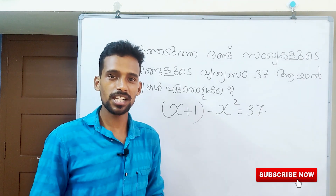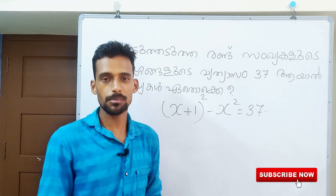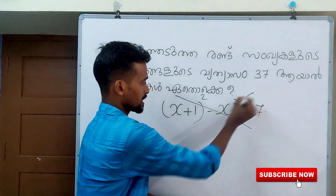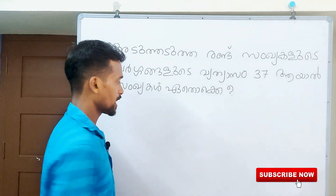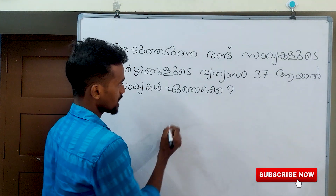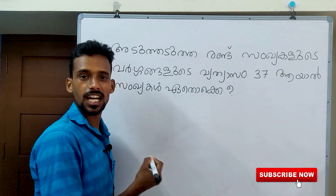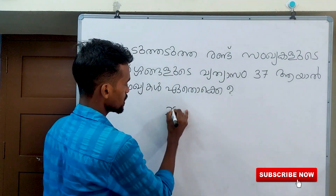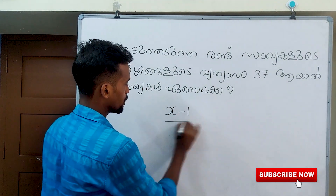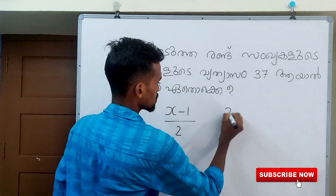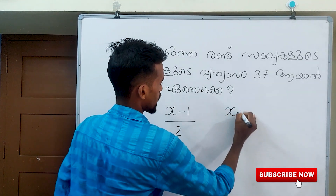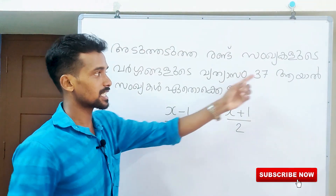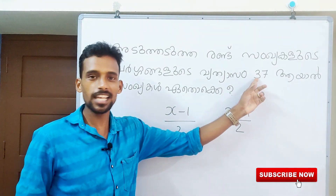We have 5 minutes, then we will have time to get this idea. So we're going to do the normal method. Now we're going to do this. It's x minus 1 by 2, then it's x plus 1 by 2. So it's done with x.